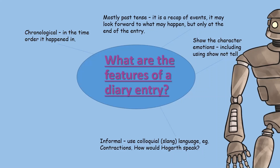For example, you might use contractions. Think about how Hogarth might speak. You would also speak in the first person, remembering to use the pronouns I, me, us and we.